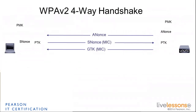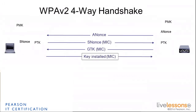Initially, the ANonce is sent in the clear. The client uses that ANonce along with its own SNonce to encrypt traffic on the way up, which allows the AP to verify that the client has the right PMK. Then when the AP sends down the group temporal key, signing it with the MIC, the client uses its own PMK on each side to verify that the access point also has the right PMK. At that point, both sides are comfortable that the other has the PMK as well.